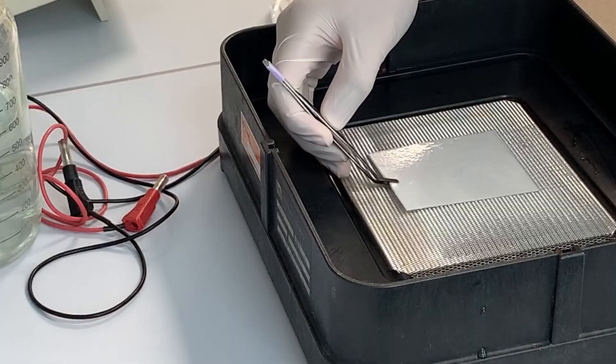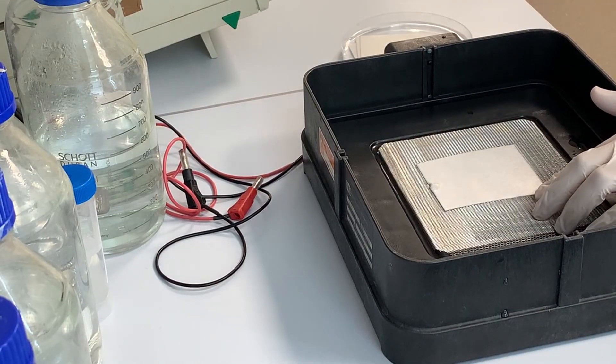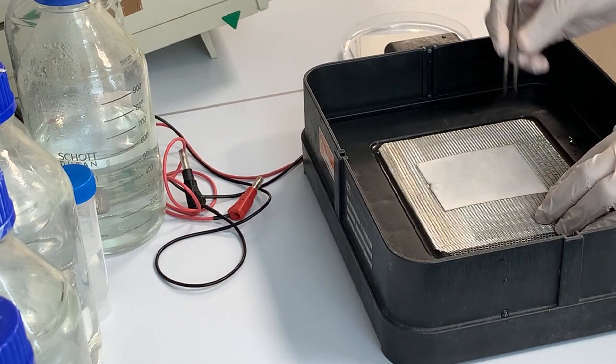Next I assemble the sandwich. First I put two Wattman papers over each other. Make sure that they stick to each other. You can roll over them with a plastic tube if you are not sure.